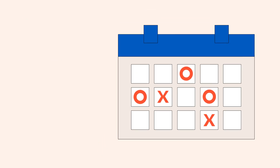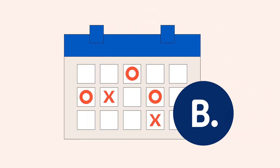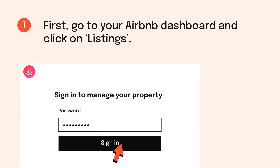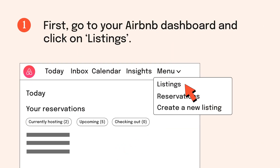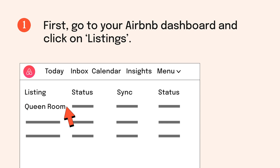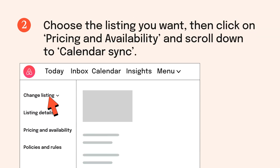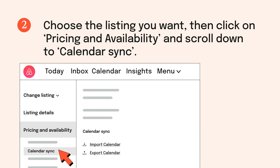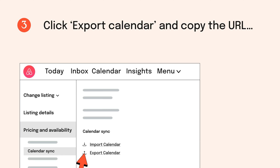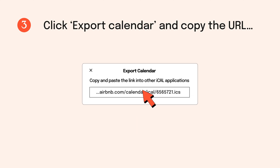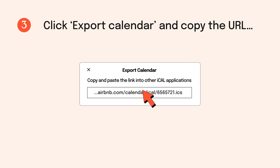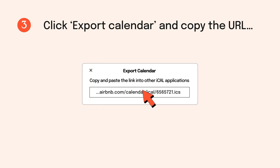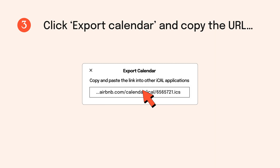Now let's take a look at how to sync your Airbnb calendar with your Booking.com. 1. First, go to your Airbnb dashboard and click on listings. 2. Choose the listing you want, then click on pricing and availability and scroll down to calendar sync. 3. Click export calendar and copy the URL. 4. You'll need to share this URL with Booking.com so the two calendars can talk to each other.